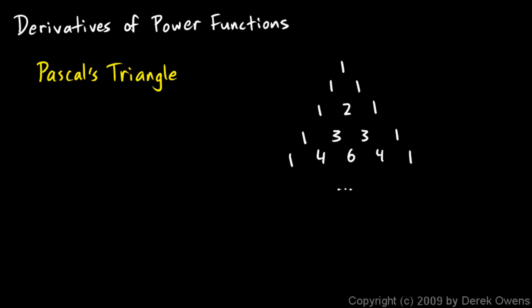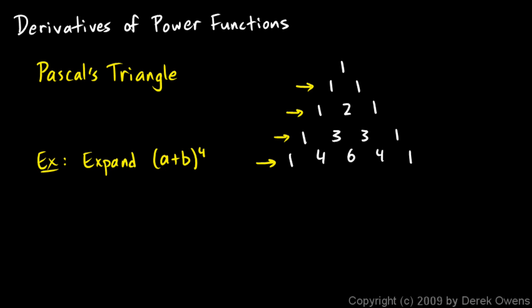You can keep going: 1's on the outside, then a 4, a 6, a 4 — and you can go on forever. These numbers are useful in a lot of ways. One of the ways they are useful is in expanding a binomial raised to a power. For example, to expand (a + b) to the 4th, we can just use the 4th line of Pascal's triangle, thinking of the top row as line 0 — so that's lines 1, 2, 3, and 4.